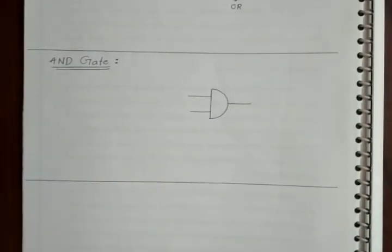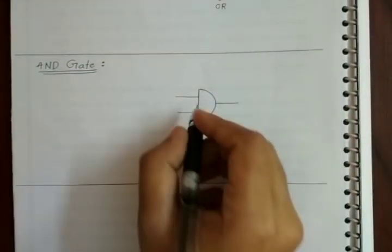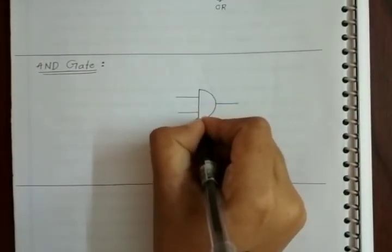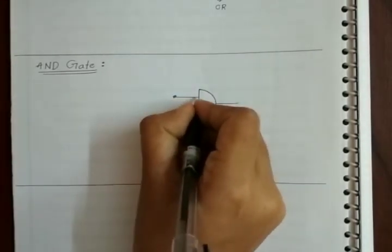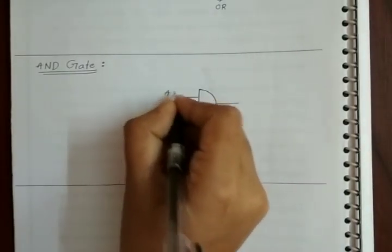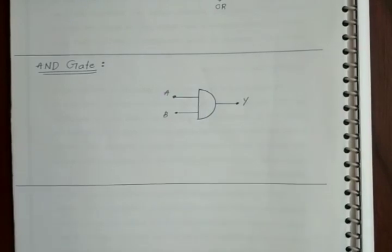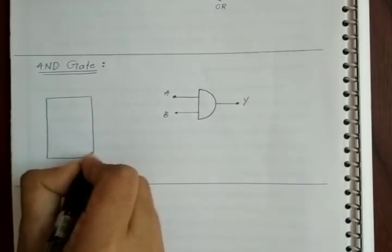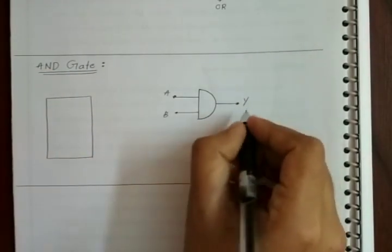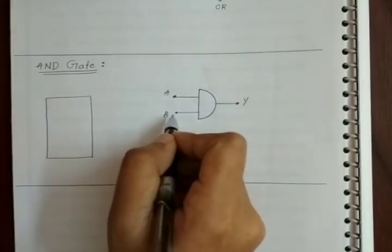Now we are going to discuss about the AND gate. The symbol for the AND gate consists of two inputs A and B, and one output represented as Y. We will construct the truth table for the AND gate. The meaning is Y is equal to 1 only when both A and B are equal to 1.